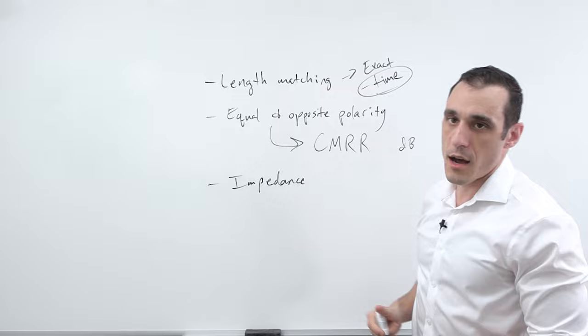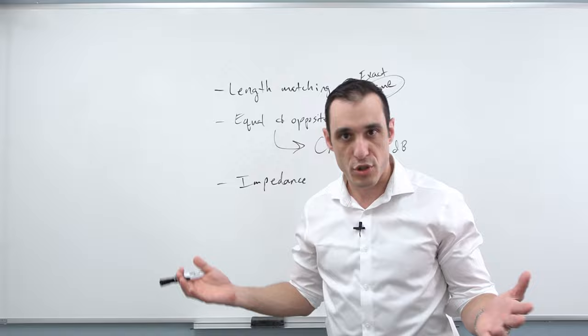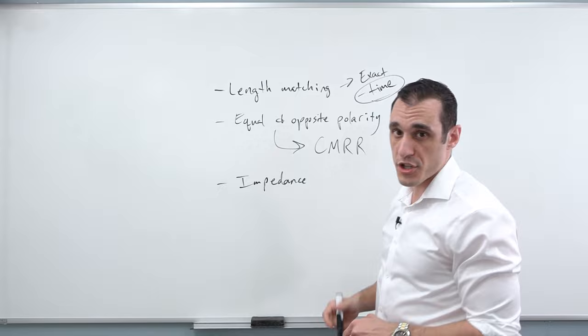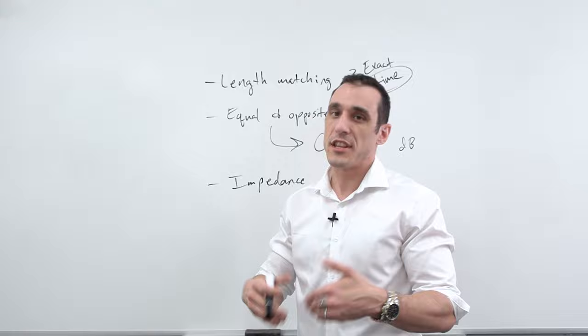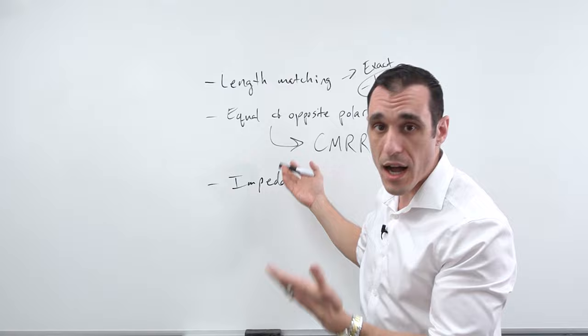The equal and opposite polarity is what gives us common mode noise reduction. It is often said that because of this, differential pairs are immune to crosstalk — that's not really true. If they were immune to crosstalk, your CMRR would be negative infinity decibels, meaning you would never have any common mode noise. You can never perfectly cancel all common mode noise, but you can get pretty close. That equal and opposite polarity does give you some level of crosstalk suppression, but it's not perfect. We'll look at why when I show an example layout.